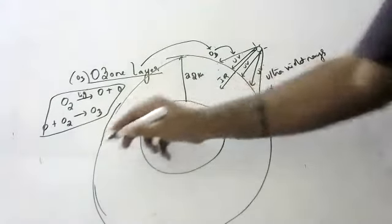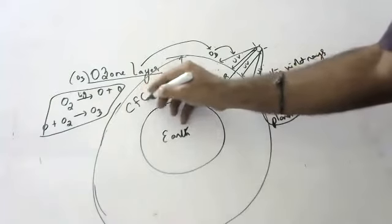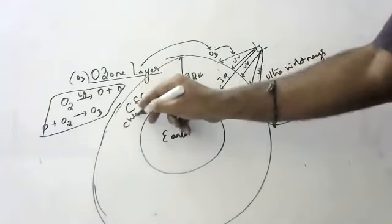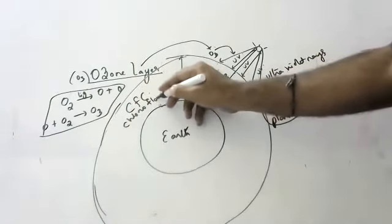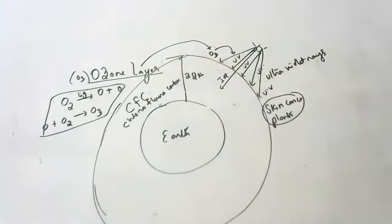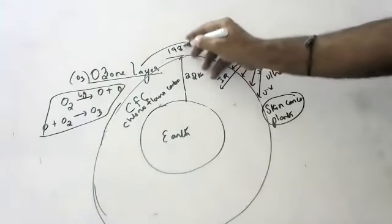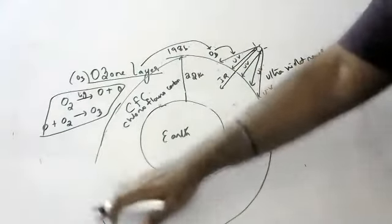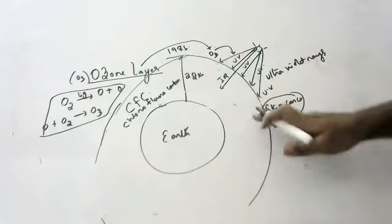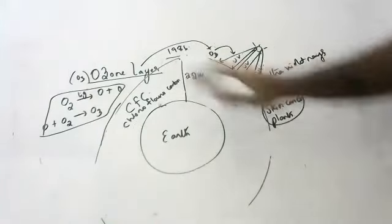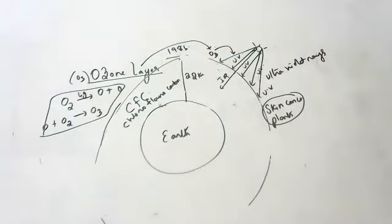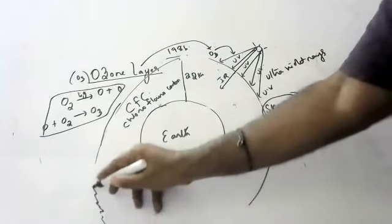But unfortunately, due to excessive use of CFCs - what is CFC? Chlorofluorocarbons. Due to excessive use of chlorofluorocarbons, what happened? In 1986, there were depletions of the ozone layer here and there. Some holes formed, especially in the Antarctic region. The ozone layer got depleted and became thin.